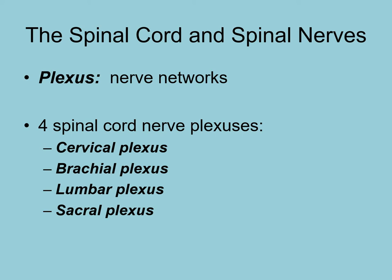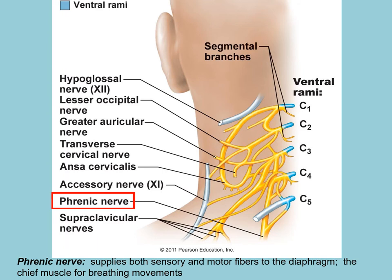A plexus refers to a network of nerves. There are four major spinal cord nerve plexuses: the cervical plexus, brachial plexus, lumbar plexus, and sacral plexus, named by their location. Some major spinal nerves include the phrenic nerve, which is a mixed nerve supplying both sensory and motor function, innervating the diaphragm and making it extremely important for breathing.